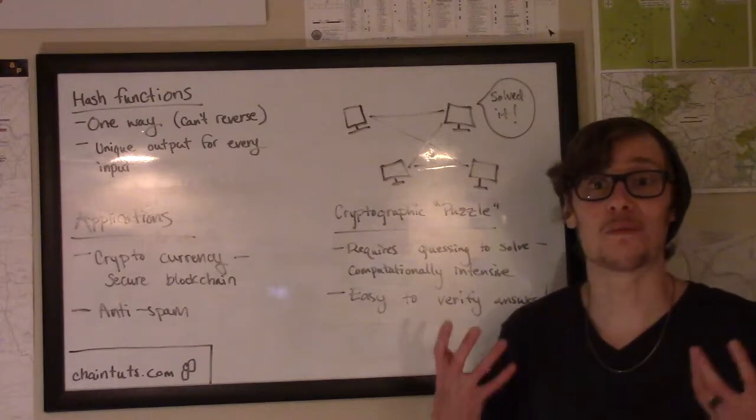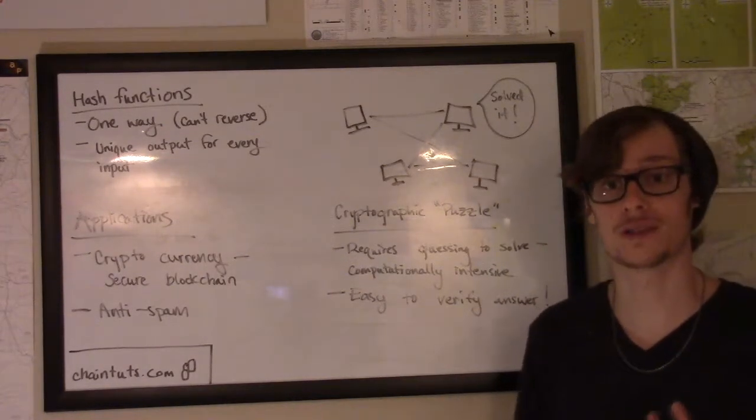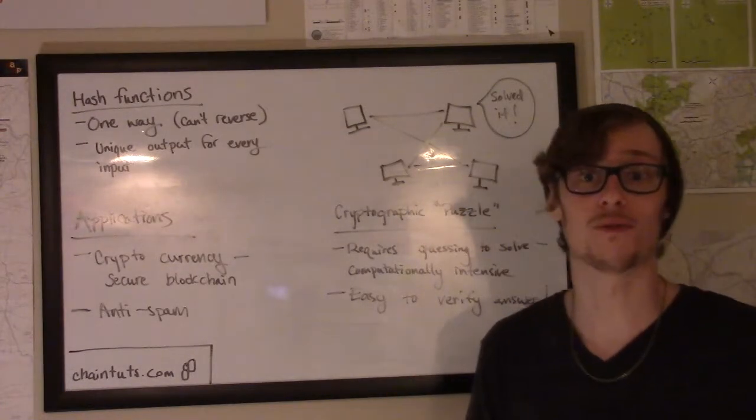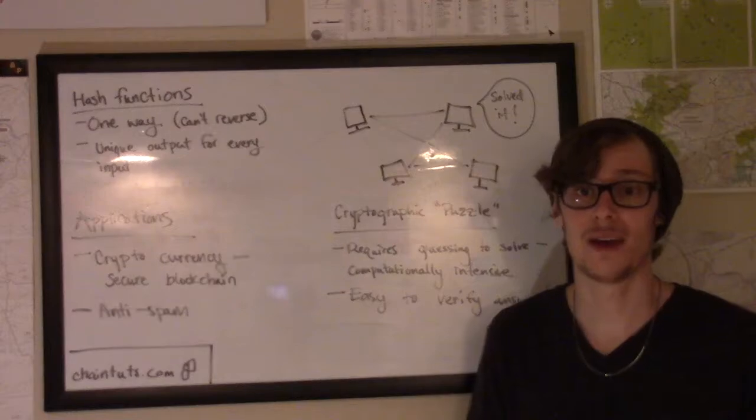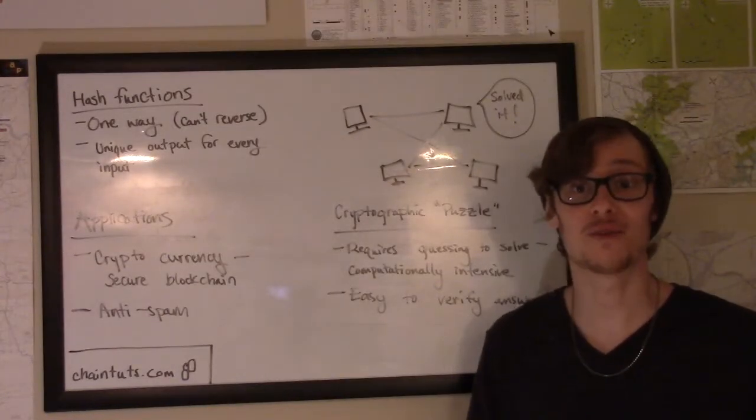So this has been a brief overview of proof of work and how it applies to things like cryptocurrencies and anti-spam. I hope you'll check out the follow-up technical video on how this works in depth. I really hope you found this interesting and informative, and thank you very much for watching.